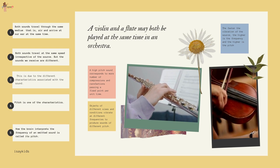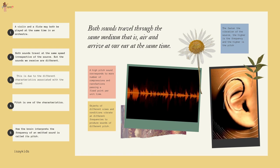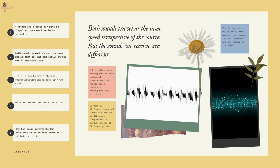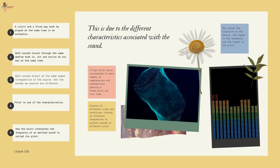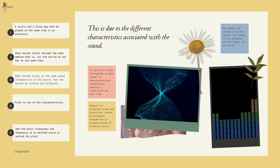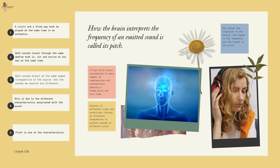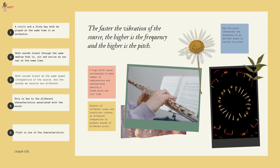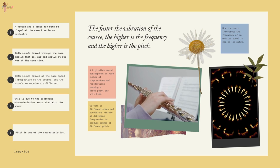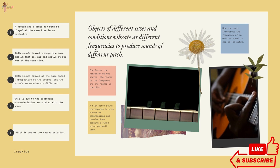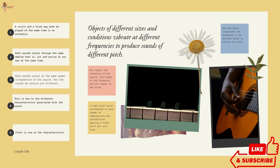A violin and a flute may both be played at the same time in an orchestra. Both sounds travel through the same medium — air — and arrive at our ears at the same time, traveling at the same speed irrespective of the source. But the sounds we receive are different due to different characteristics associated with the sound. Pitch is one of these characteristics. How the brain interprets the frequency of an emitted sound is called its pitch. The faster the vibration of the source, the higher is the frequency, and the higher is the pitch. A high-pitch sound corresponds to more compressions and rarefactions passing a fixed point per unit time.